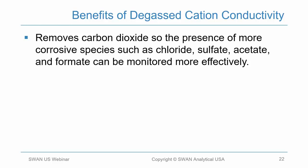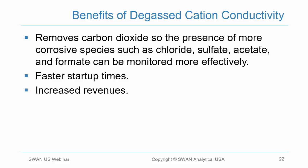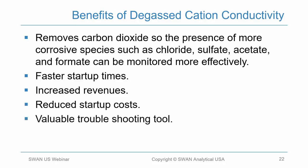The value of degas conductivity is that it removes carbon dioxide so that more corrosive species — such as chloride, sulfate, acetate, and formate — can be monitored more effectively, eliminating the masking effect of carbon dioxide. It can provide much faster startup times if steam is restricted to the steam turbine due to conductivity or other chemistry parameters, increasing revenues and reducing startup costs. It is also a valuable troubleshooting tool to determine whether elevated steam or condensate feedwater cation conductivity is caused by carbon dioxide or something more corrosive such as chlorides and sulfates — eliminating the guesswork.